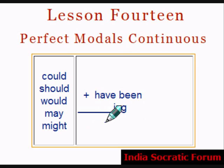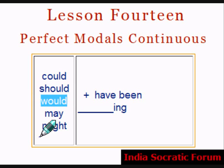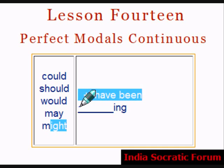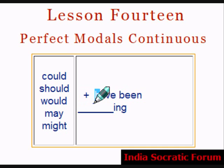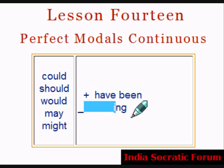This is the continuous form of a modal verb. The modals could, should, would, may, and might are combined with 'have been' plus the main verb with -ing.